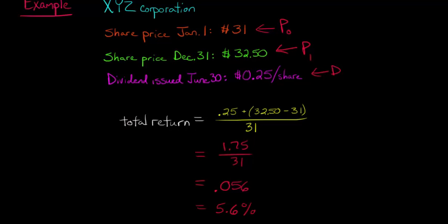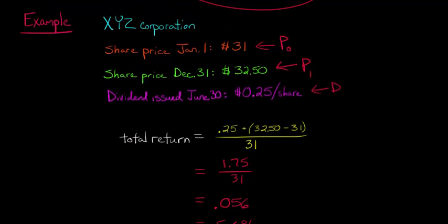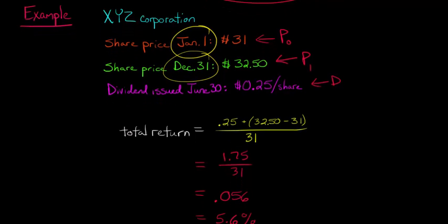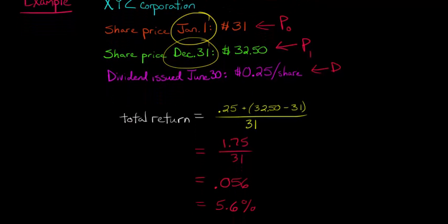Now, I've rounded here, but basically I just want you to understand. So this means if you bought this stock on January 1st, and you held it to December 31st of that same year, and we say, given these dividends, given the change in the share price, what was your return? What was your total return from owning this stock? And it would be 5.6%.